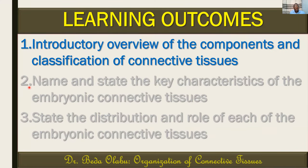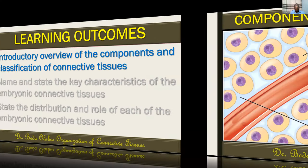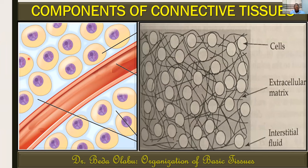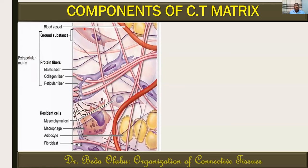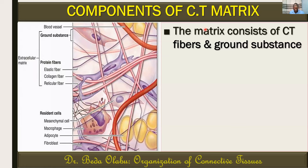Let's focus on the first learning outcome — the components and classification of connective tissue. We've already said that all tissues are made up of cells and matrix. With that in mind, connective tissues are also made up of cells and the matrix. The matrix of connective tissues consists of two major components: connective tissue fibers and what we call the ground substance.